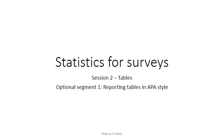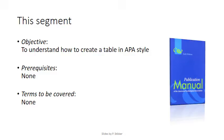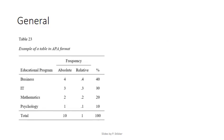Welcome to Statistics for Surveys, Session 2: Tables, Optional Segment 1 — Reporting Tables in APA Style. In this segment, we'll discuss how to create a table in the American Psychological Association style, based on the sixth edition of the publication manual. There are no prerequisites for this segment, and no new terms will be discussed. Below is an example of a table in APA format.